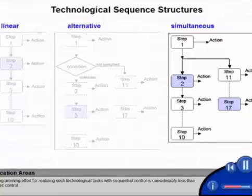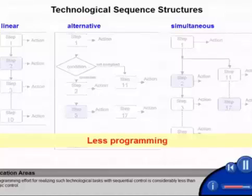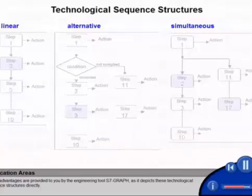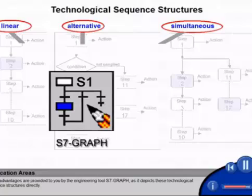The programming effort for realizing such technological tasks with sequential control is considerably less than with logic control. These advantages are provided to you by the engineering tool S7 Graph, as it depicts these technological sequence structures directly.